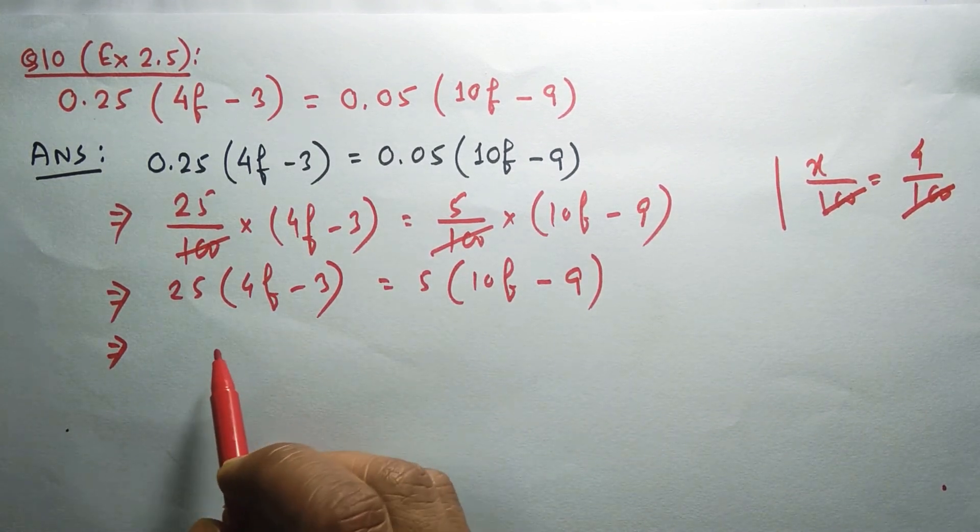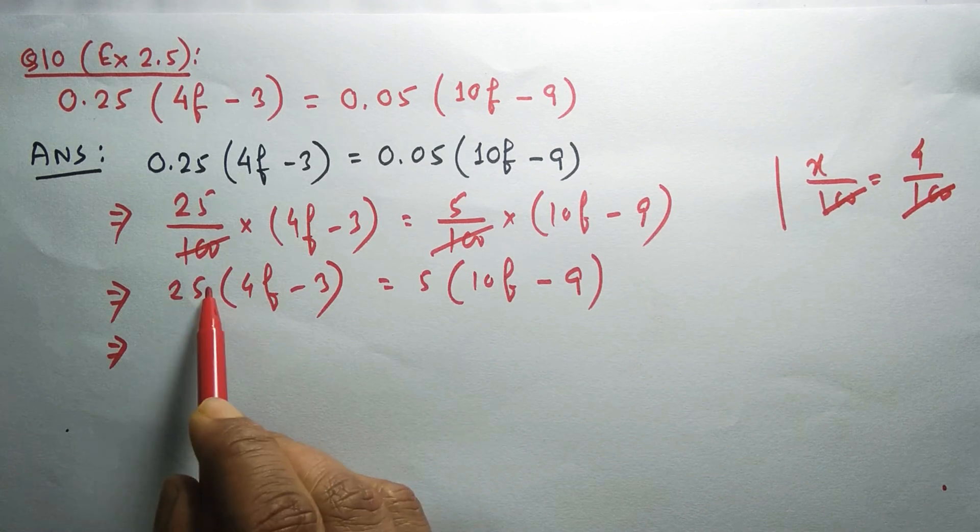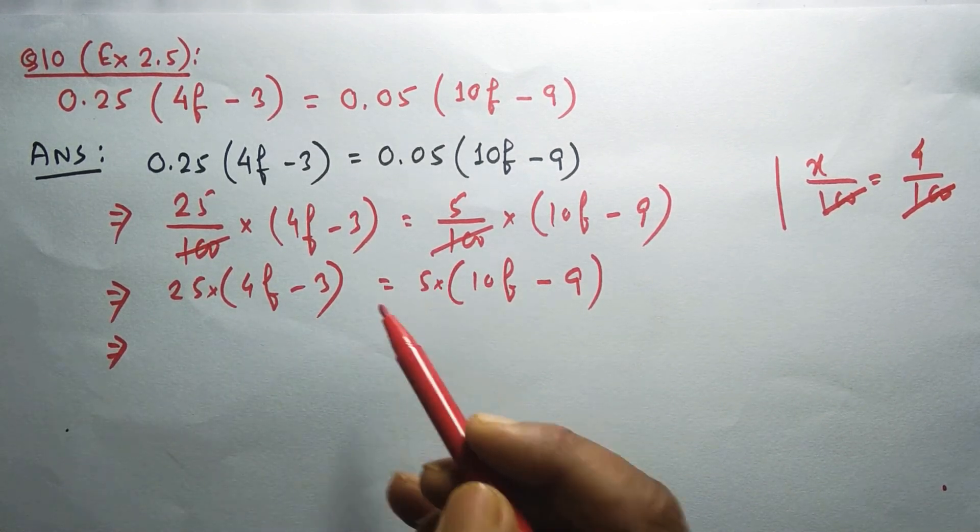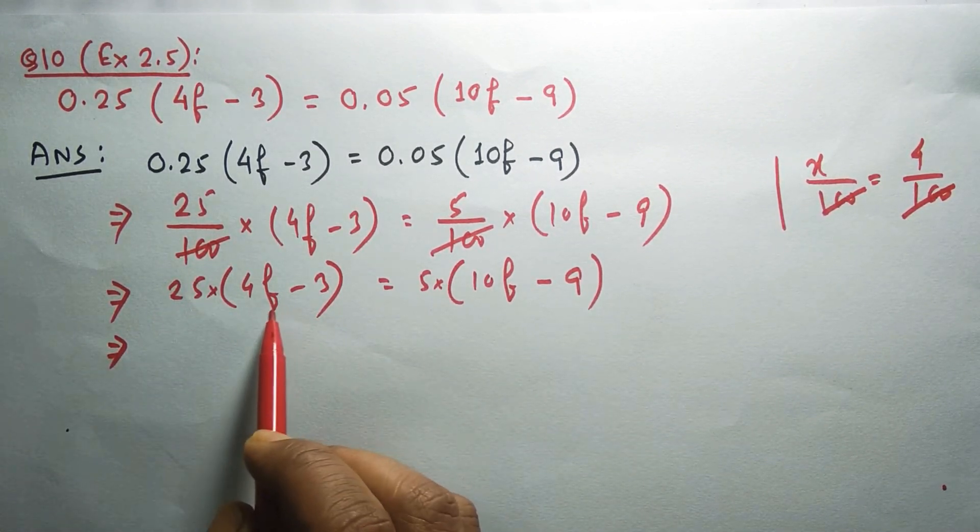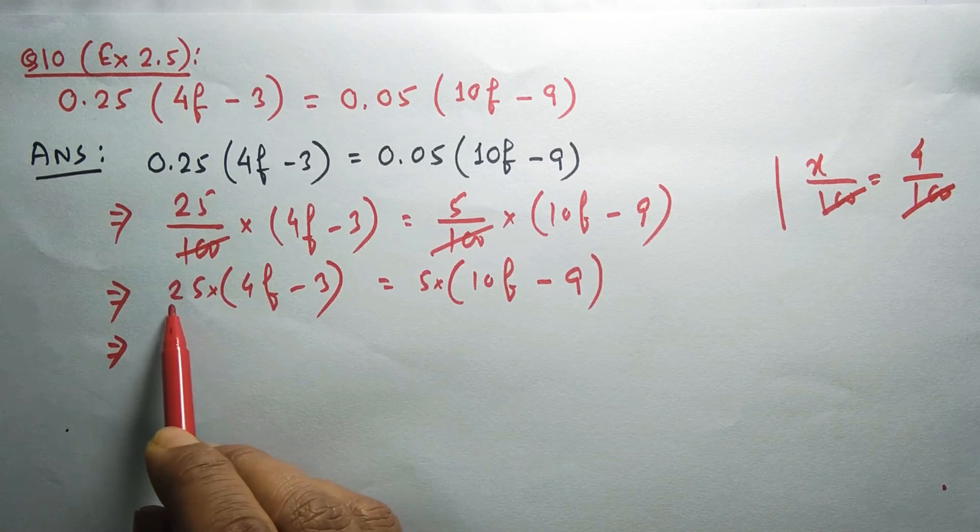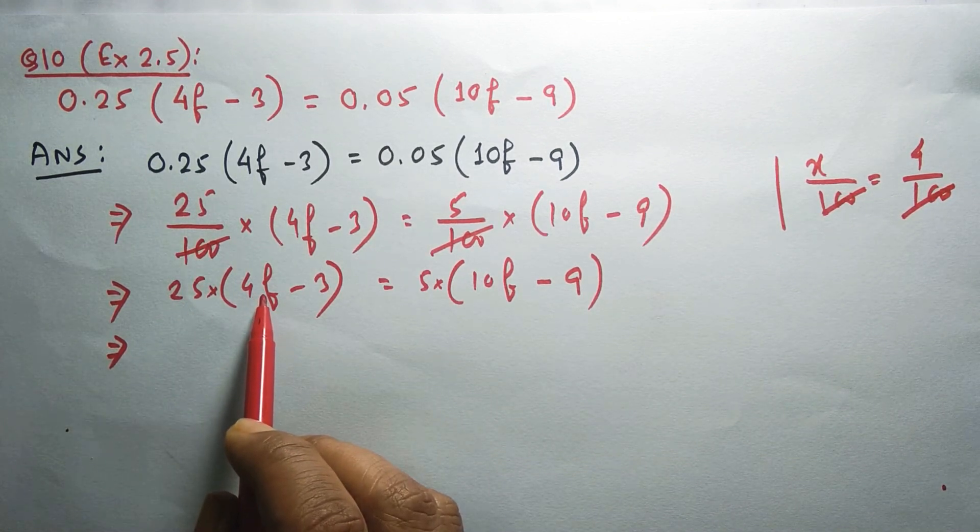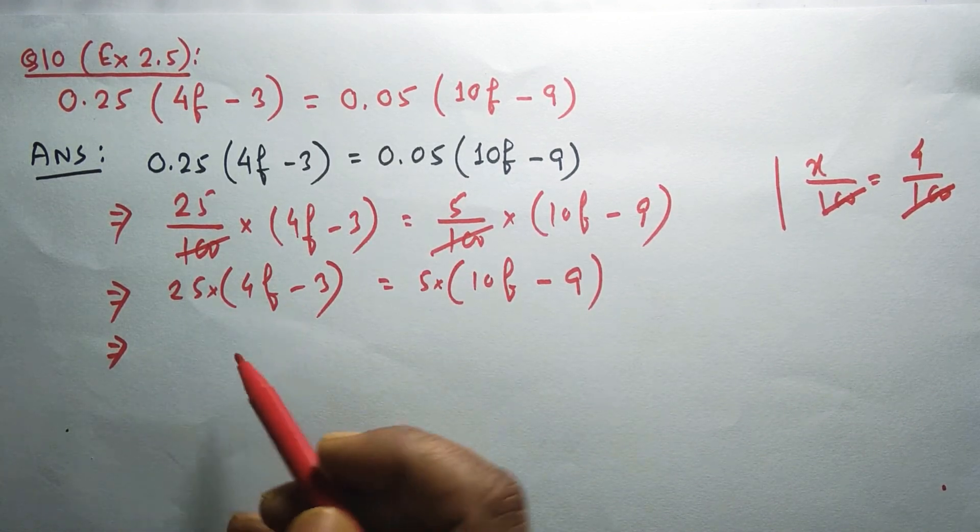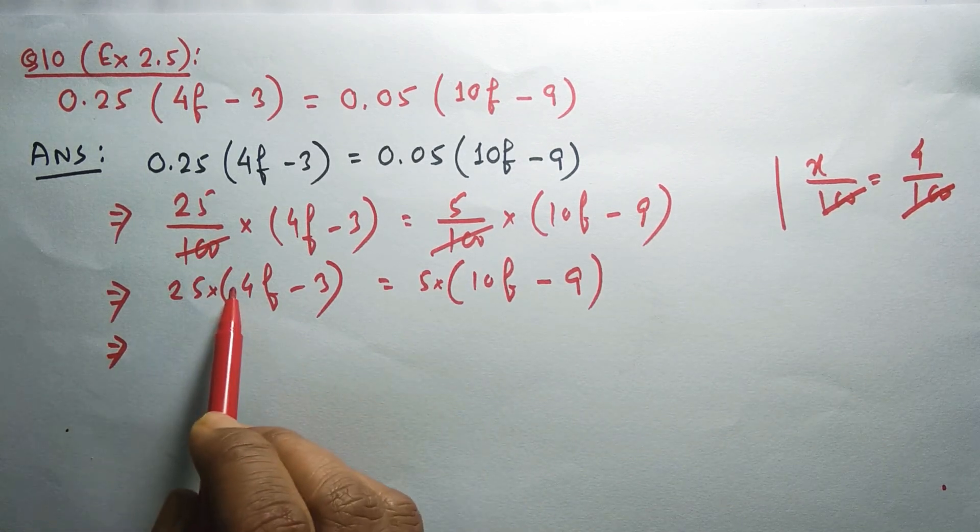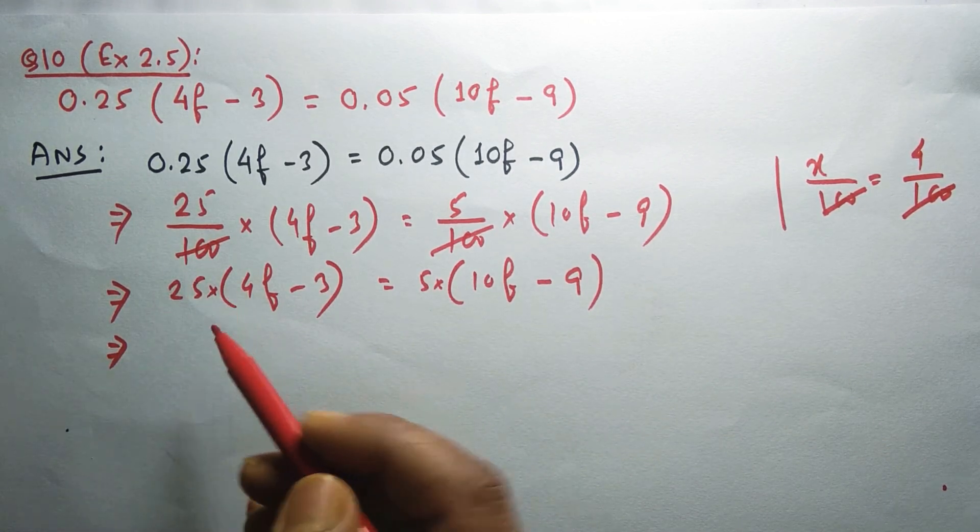Here this is into, similarly here also is into. We'll use the distributive property by multiplying this 25 with 4 times f, again 25 into 3.